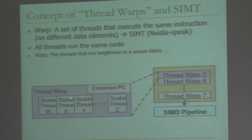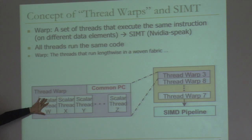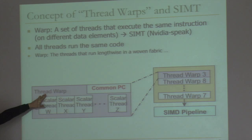The programmer doesn't specify or need to change the vector length. The programming model is very much like a multi-threaded program — you just write a thread. The GPU executes in a SIMD manner. The collection of threads is called a warp — NVIDIA calls it a warp, AMD calls it a wavefront. A warp is a set of threads that execute the same instruction on different data elements, with a common program counter, and they execute at the same time on a SIMD pipeline.